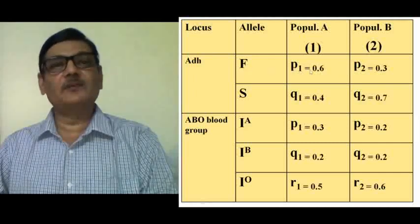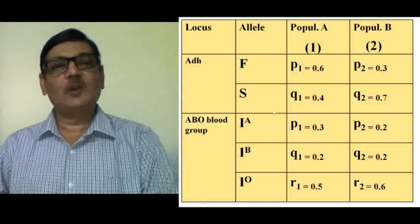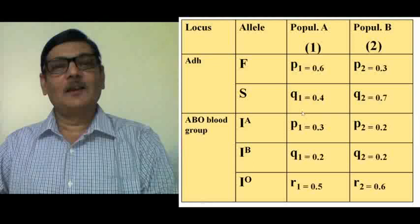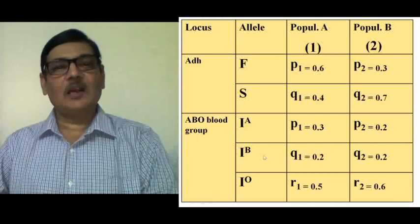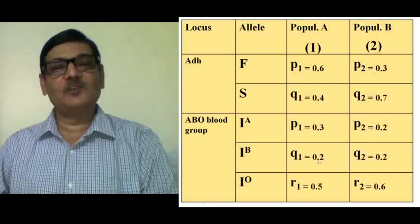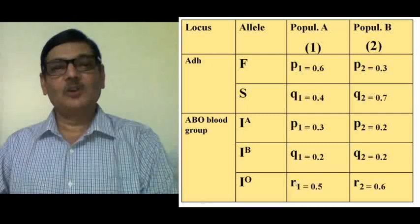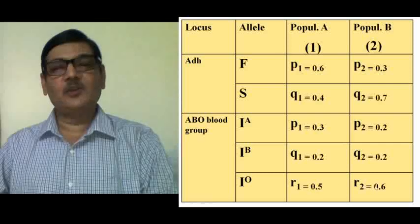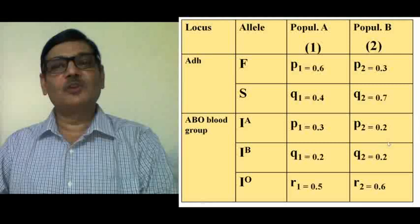The allele frequency data from the table: for the ADH fast allele, P1 = 0.6 in Population 1 and P2 = 0.3 in Population 2. The slow allele frequency Q1 = 0.4 and Q2 = 0.7. For the ABO locus, the IA allele frequency P1 = 0.3 and P2 = 0.2. The IB allele frequency Q1 = Q2 = 0.2 in both populations. The IO allele frequency is represented as R1 for Population 1 and R2 for Population 2. Once you have all such data, you can put it into the formula to calculate genetic identity.